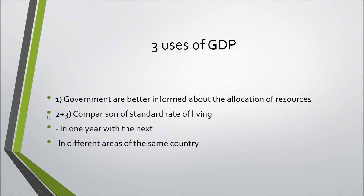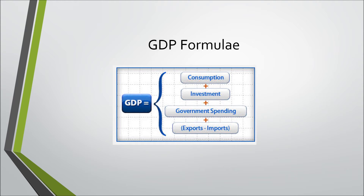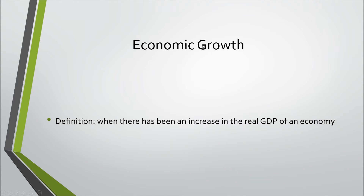There are three uses of GDP. First, governments are better informed about the allocation of resources — poor allocation could result in market failure. Second, it allows comparison of the standard of living in one year versus the next. Third, it enables comparison of standard of living in different areas of the same country. The GDP formula — consumption plus investment plus government spending plus net exports (exports minus imports) — is also worth remembering for exam papers.